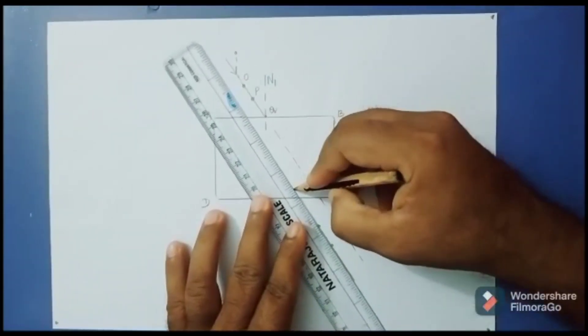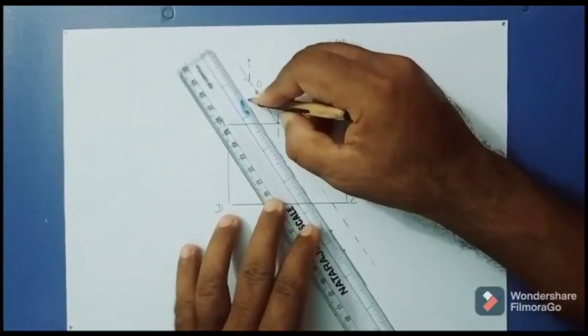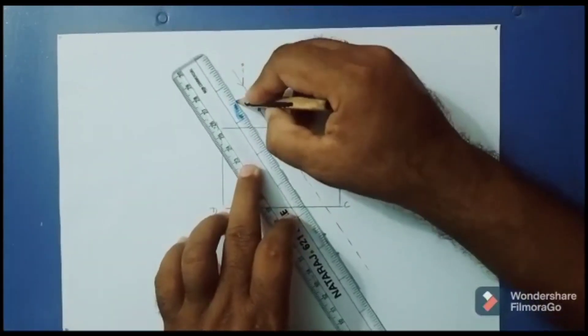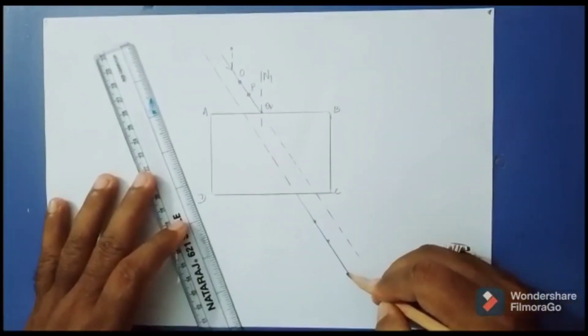Extend the same thing on the other side of the rectangular glass slab. Now this ray is the emergent ray.